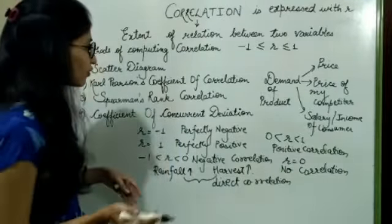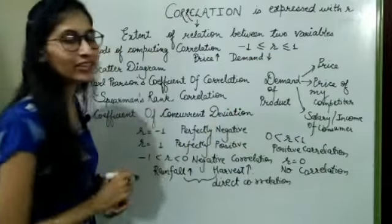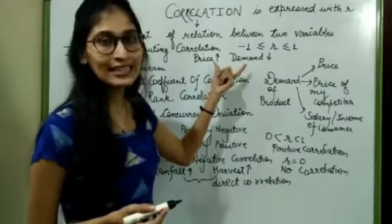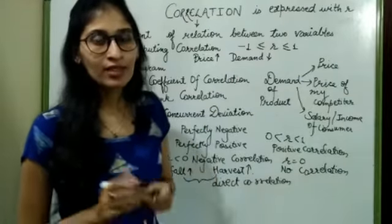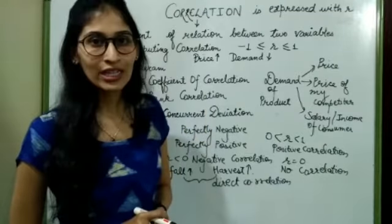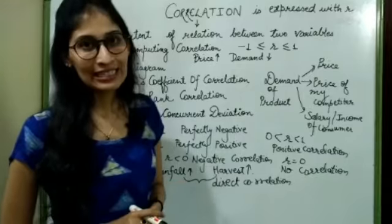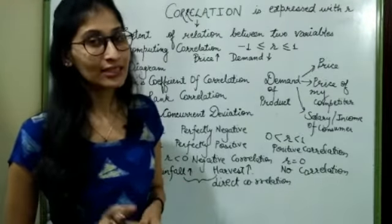For example, with the increase in price, the demand will definitely decrease. So this is the example of indirect variables or negative correlation. If with the increase of one the other is also increasing, it is positive correlation. And with the increase of one, the other decreasing — we call it negative correlation.